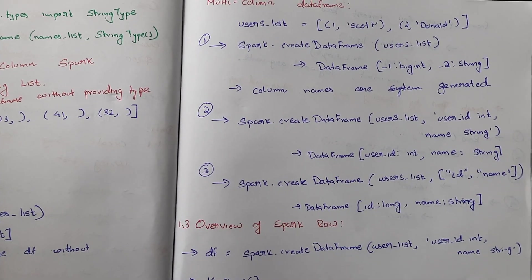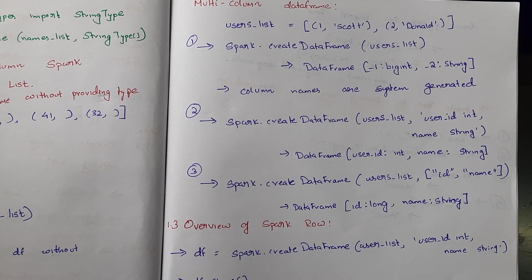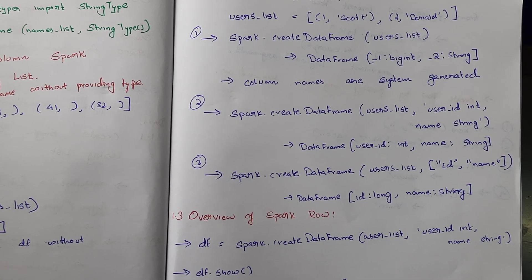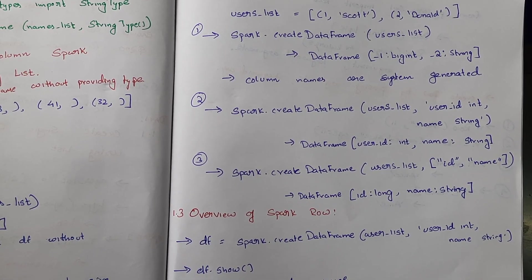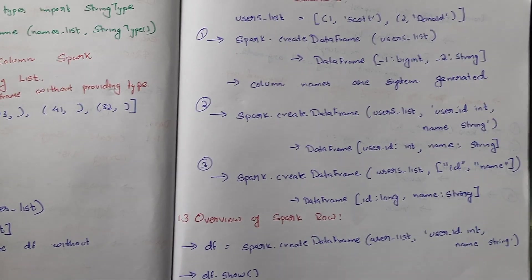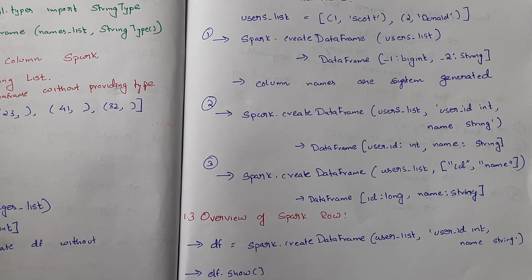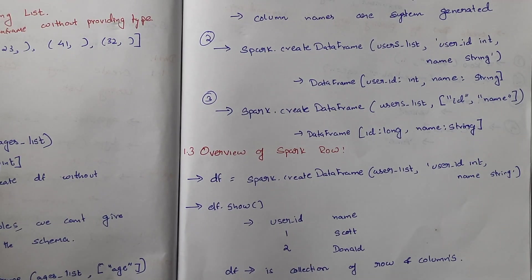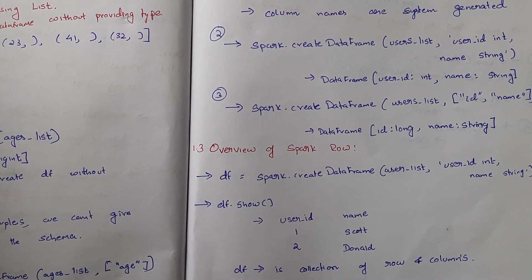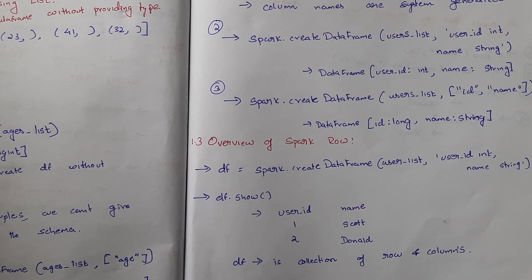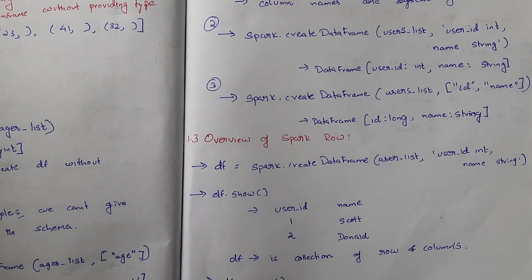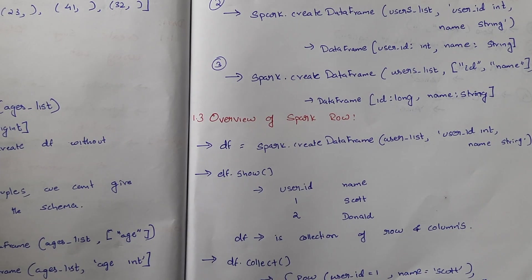Another approach is spark.createDataFrame(users_list, schema=['id', 'name']) — passing a list of column names only — so the DataFrame is created with column names 'id' and 'name', but data types are assigned by default as long and string. We have now seen how to create single-column and multi-column DataFrames with and without providing a data type or schema. Next we'll cover an overview of the Spark Row.